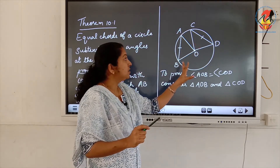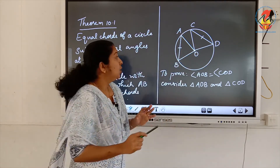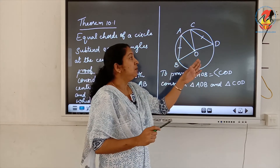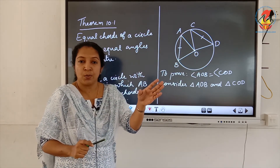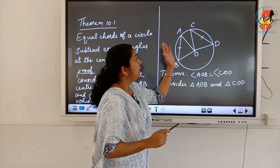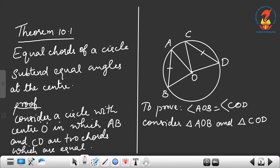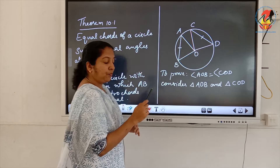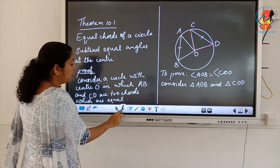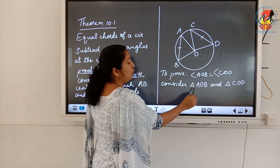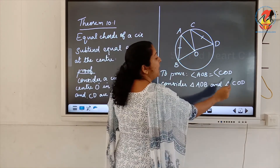Construction: Consider a circle with center O. Let AB and CD be two equal chords. Join OA, OB, OC, and OD. We have to prove that angle AOB is equal to angle COD.